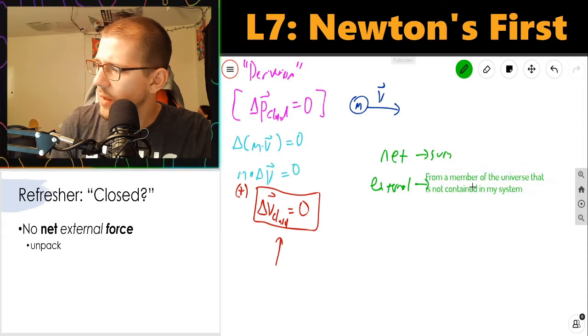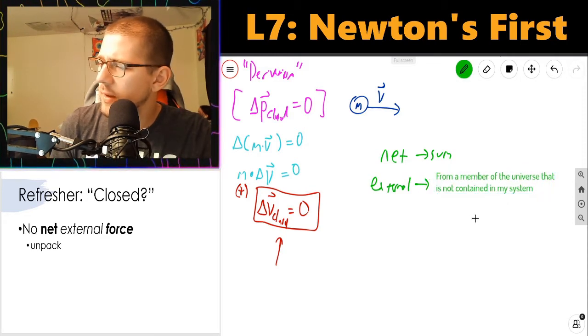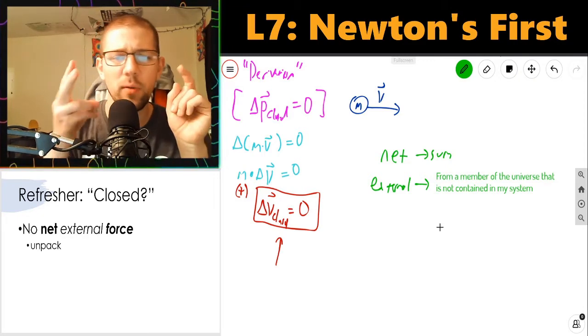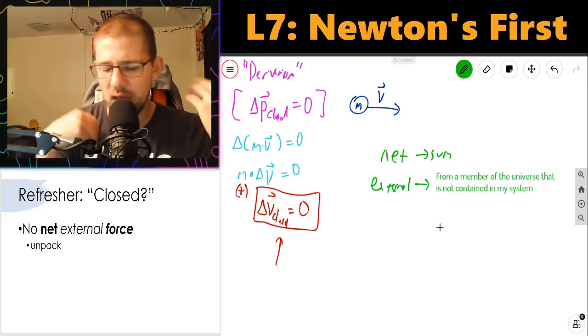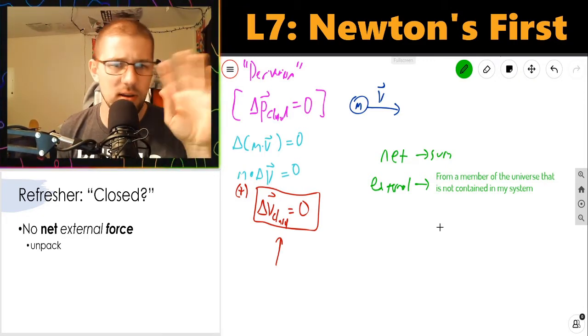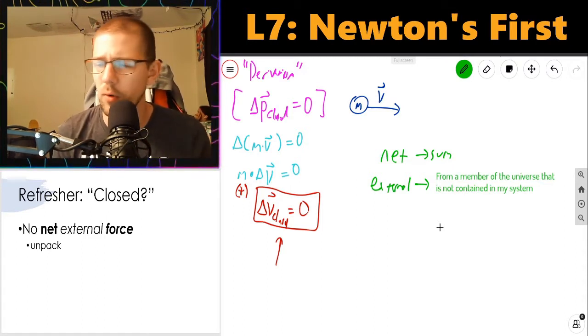In these asteroid problems we've been doing, usually we've been treating either one asteroid or both asteroids as our system. Depending on which definition you pick, you can have external forces or not.